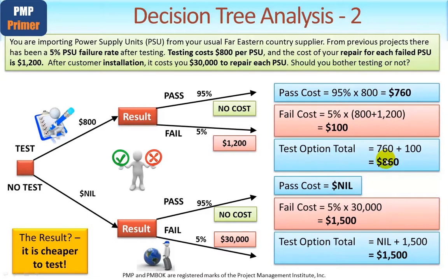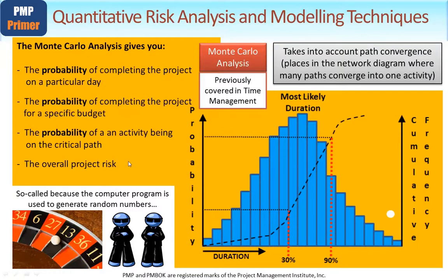Since we've already covered the quality management knowledge area, it shouldn't be surprising that it's cheaper to test. Now, this one you've seen before — it's called Monte Carlo analysis. We looked at it in terms of estimating, covered in the time management knowledge area, and we're now interested in risk. This process is done by carrying out multiple calculations and takes into account path convergence — places in the network diagram where many paths converge into one activity. We can come up with a range of figures for likely outcomes and likely risk areas. For the exam, all you need to know is that Monte Carlo analysis is a useful tool used in quantitative risk analysis and modelling techniques.